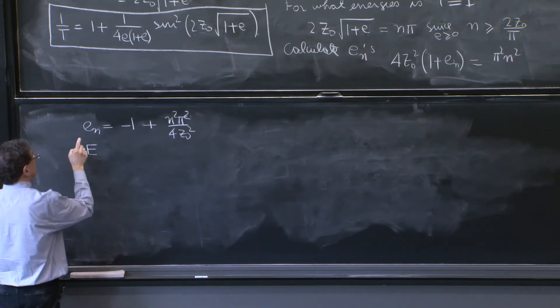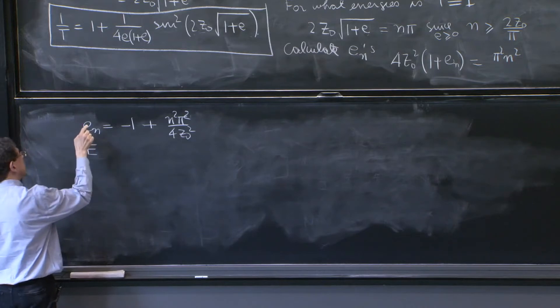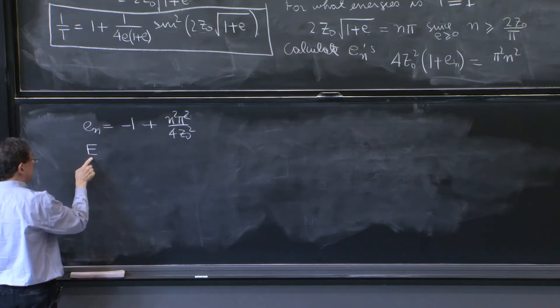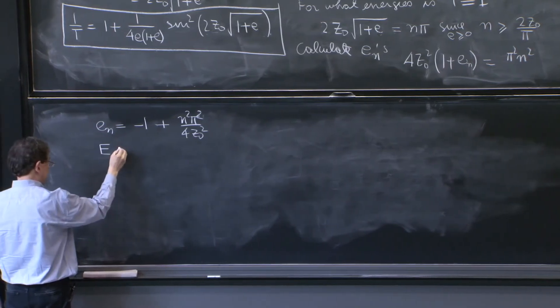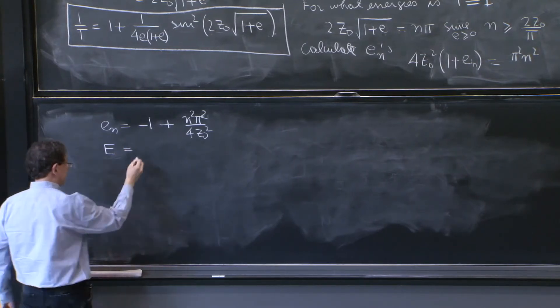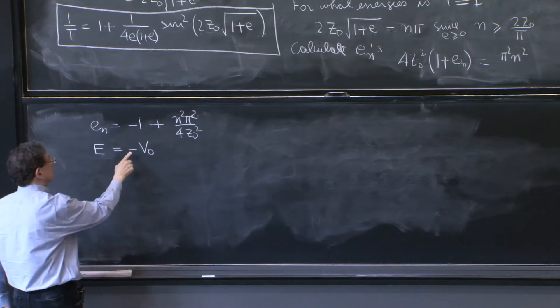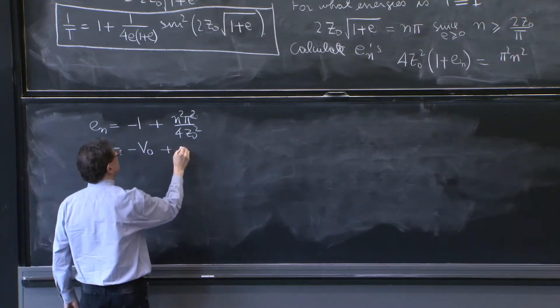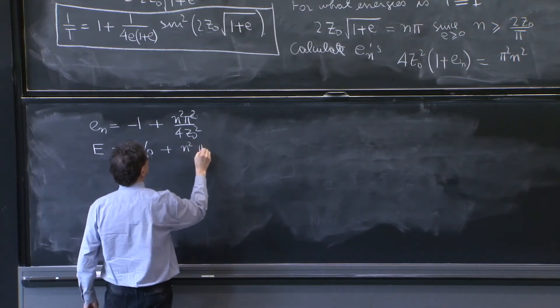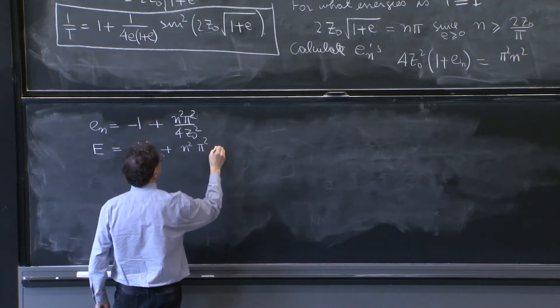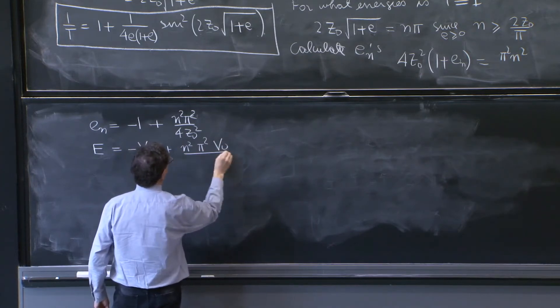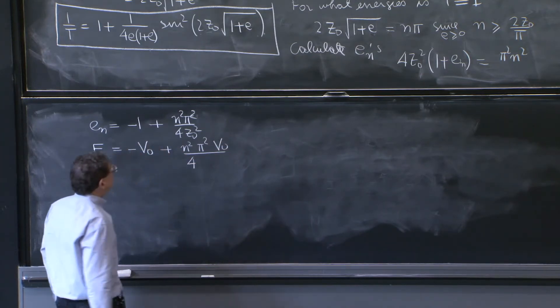So multiply En, remember, was energy divided by v0. So multiply all terms by v0. So we've got e equals minus v0 plus n squared pi squared v0 over 4z0 squared.